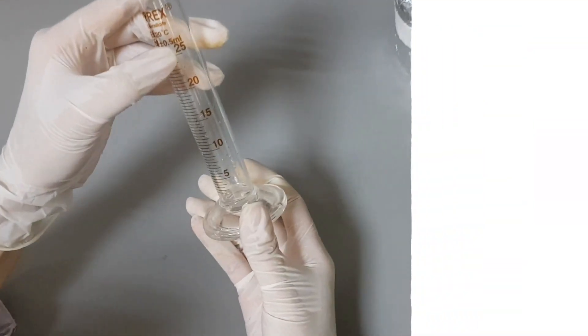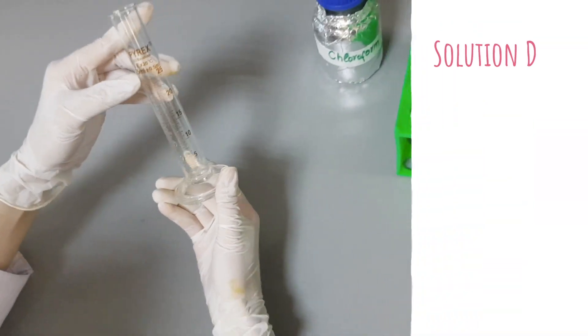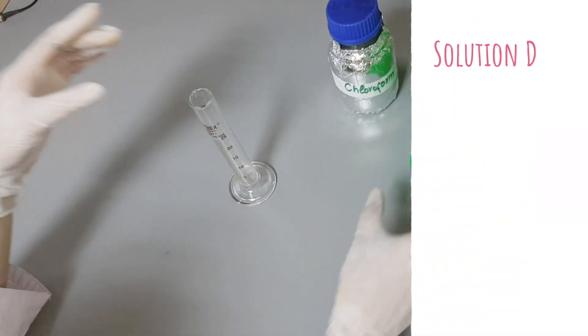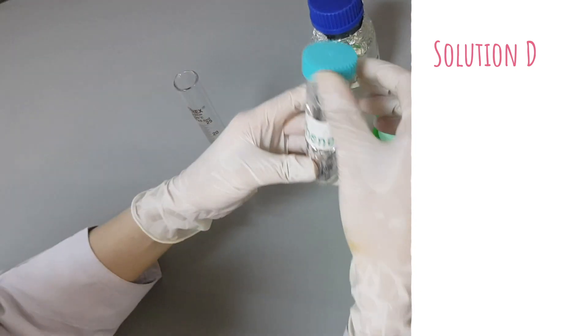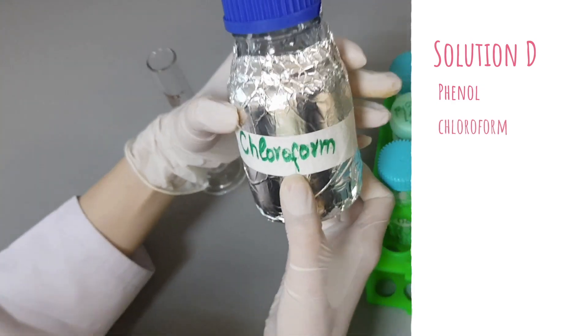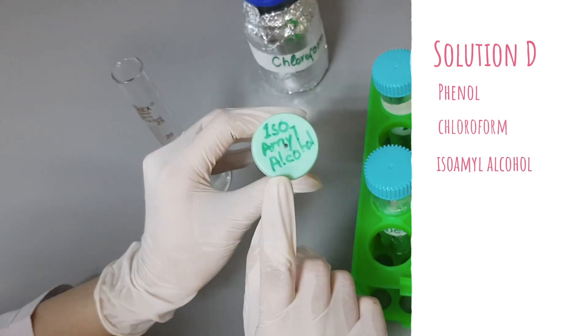Now the next solution is solution D. PCI is also known as solution D and it is composed of three reagents: phenol, chloroform, and isoamyl alcohol.